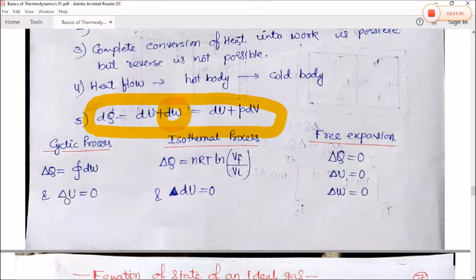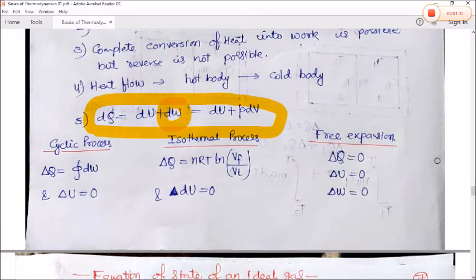For an isothermal process, ΔQ = nRT ln(Vf/Vi), where f is final and i is initial, and ΔU = 0. For free expansion, ΔQ = 0, ΔU = 0, and ΔW = 0.